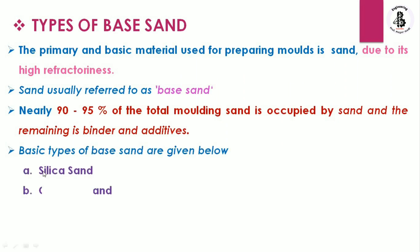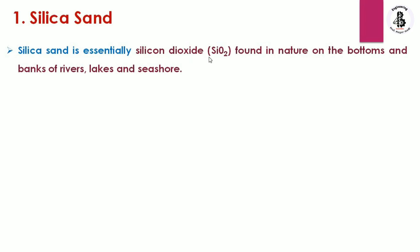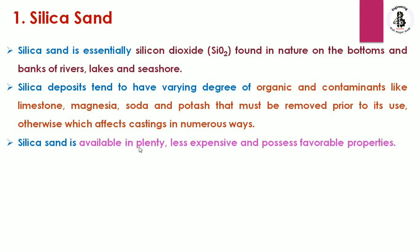Silica sand is essentially silicon dioxide (SiO2), which is found in nature at the bottoms and banks of rivers, lakes, and seashores. It is easily available in the open market. Silica deposits tend to have varying degrees of organic contaminants like limestone, magnesia, soda, and potash, which must be removed prior to use. Silica sand is available in plenty, is less expensive, and possesses favorable refractoriness properties.